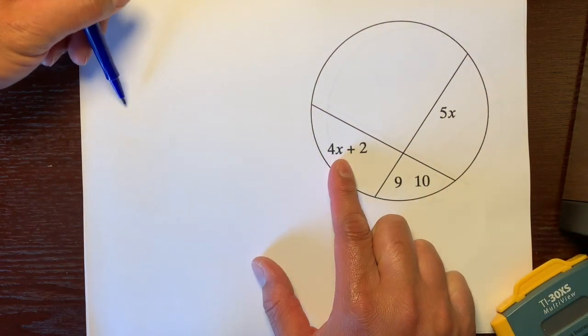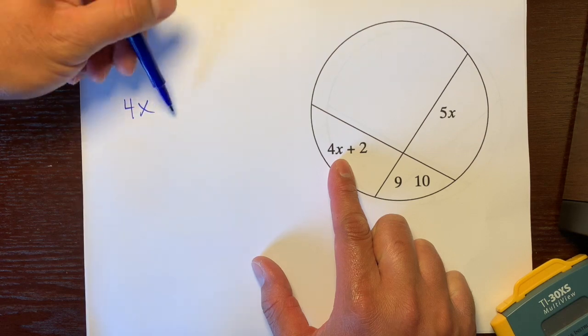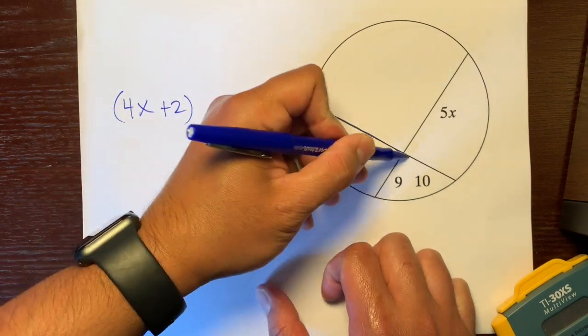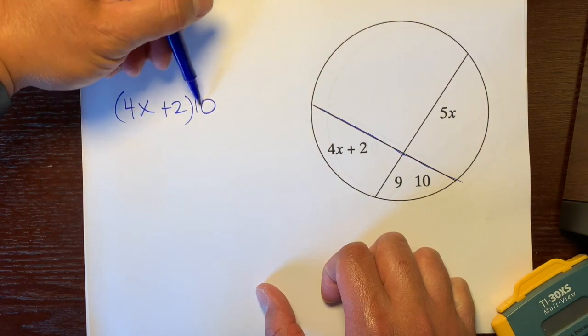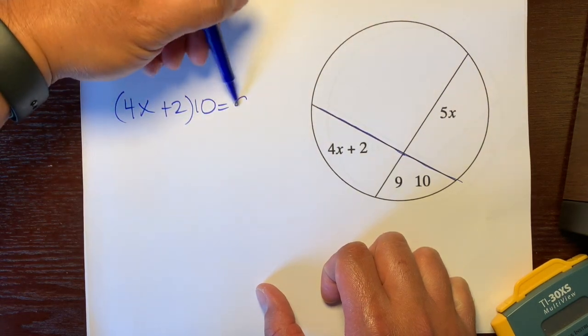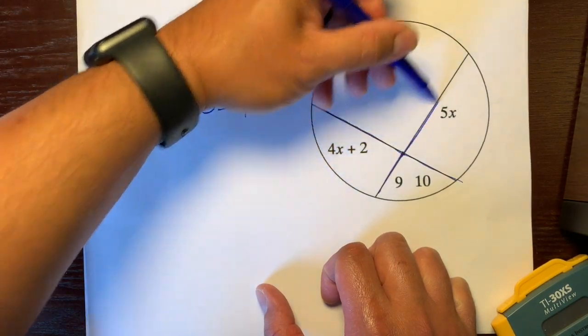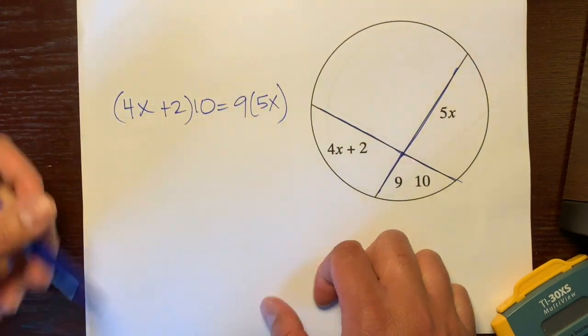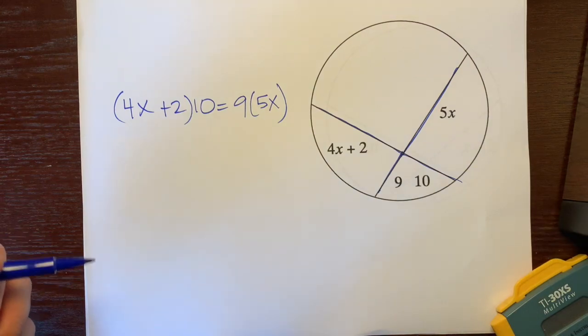So I'm going to write 4x plus 2, which is this piece, times its other piece, which is 10, is equal to 9, which is this piece, times its other piece, which is 5x. All right, so let's just solve this equation.